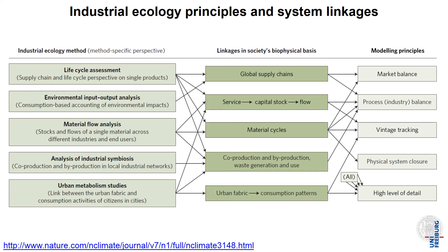Those linkages are: global supply chains — the link between remote resource extraction, production, and consumption; the link between service, capital stock and flow (for example, when I want to drive a car, I need a car in the stock and somebody else needs to produce the car, so there needs to be a material flow at some point); material cycles — the linkages between resource extraction, manufacturing, use, and recycling; co-production and by-production, for example generation of scrap waste or combined heat and power generation; and the link between the urban fabric like the road network and consumption patterns like energy demand for transport.